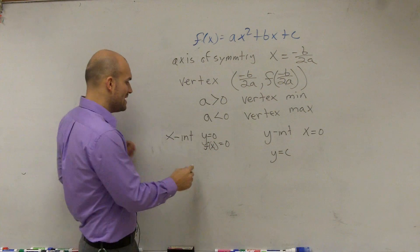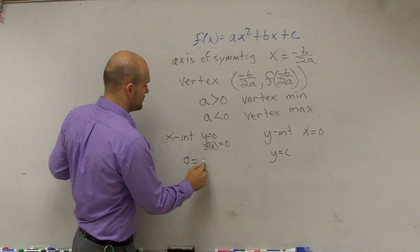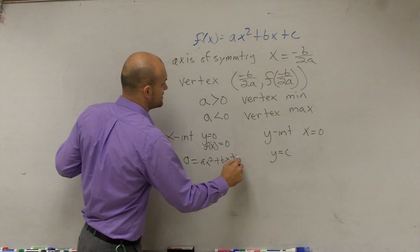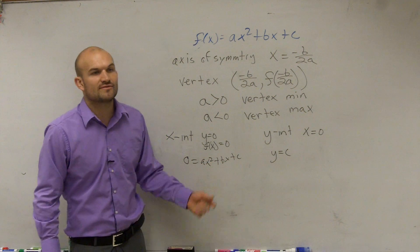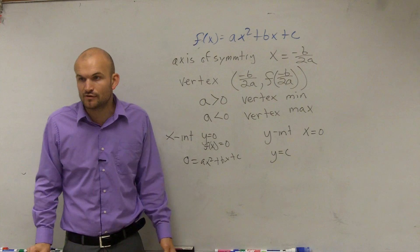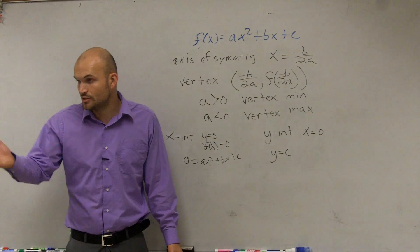So now remember, when we had something like this, we'd say 0 equals ax squared plus bx plus c. What was the way that we learned to find the value of x's on your previous test? You had to do what?